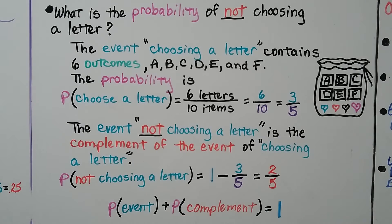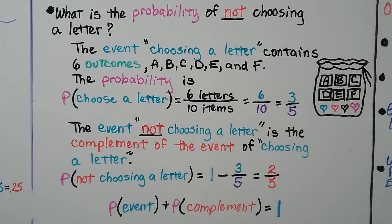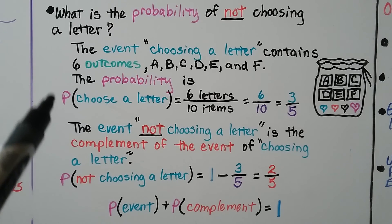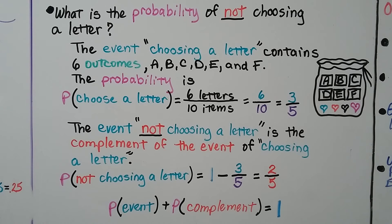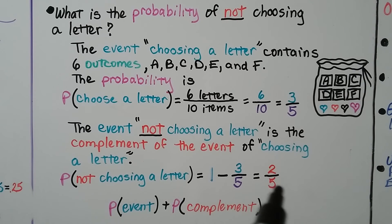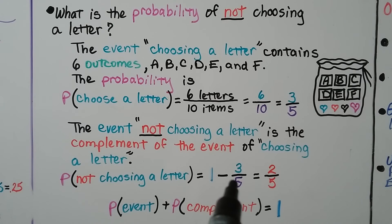With our bag of 10 items including four hearts, what's the probability of not choosing a letter? The event choosing a letter contains six outcomes — A, B, C, D, E, and F — and the probability of choosing a letter is 6/10, which simplifies to 3/5. The event not choosing a letter is the complement, so its probability is 1 minus 3/5, which equals 2/5. The probability of the event plus the probability of the complement equals 1: 3/5 plus 2/5 is 5/5, which is 1.